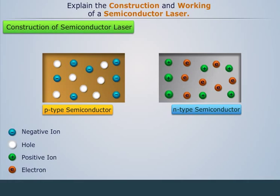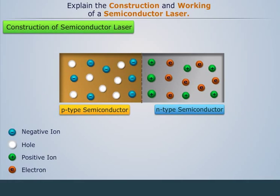When these P-type and N-type semiconductors are joined, electrons flow from N-type to P-type and holes flow from P-type to N-type and recombine near the junction.